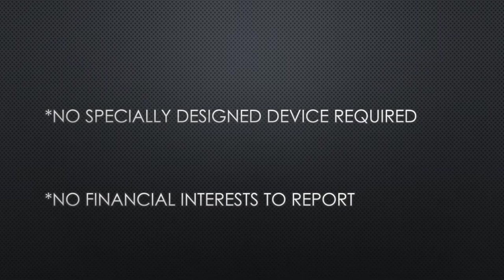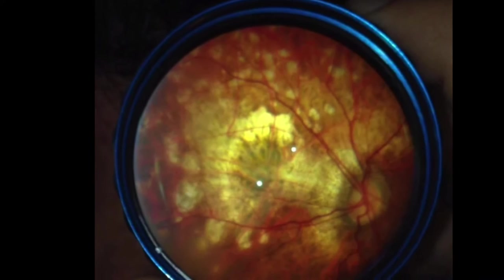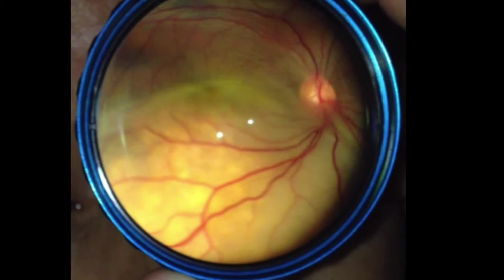Smartphone-based fundus photography represents an inexpensive and useful tool for the documentation of retinal pathology. Achieving good peripheral fundus photography with a smartphone and an indirect bio lens, without the need of specially designed adapters, may seem difficult at first, but can become easy with practice and some tips and tricks.